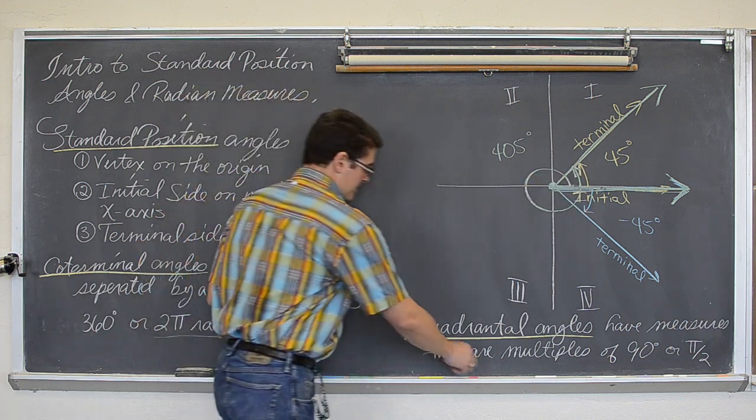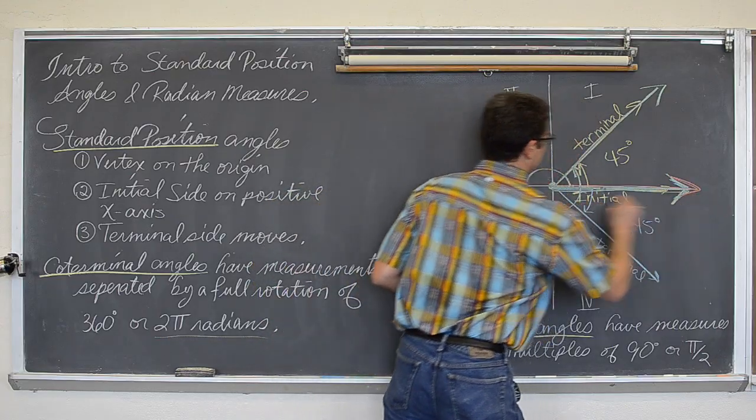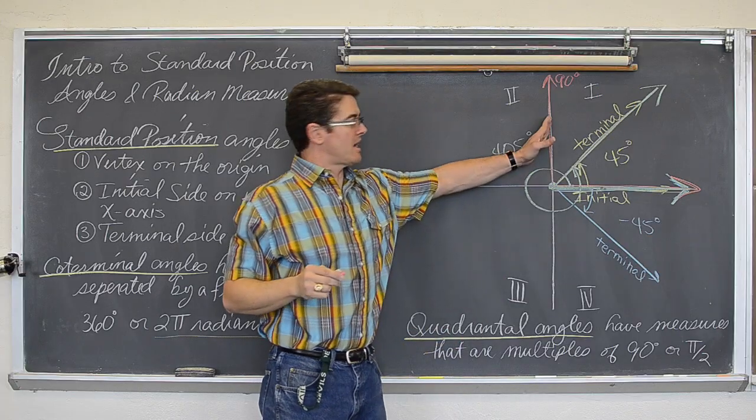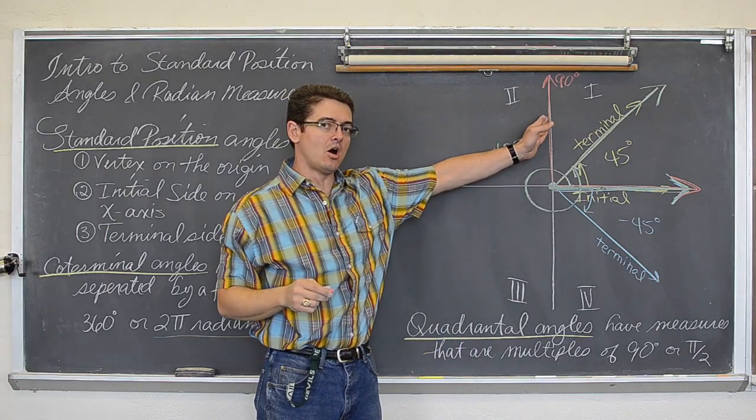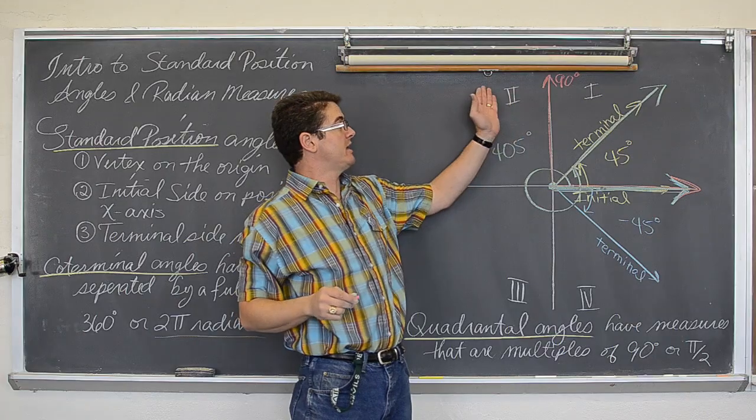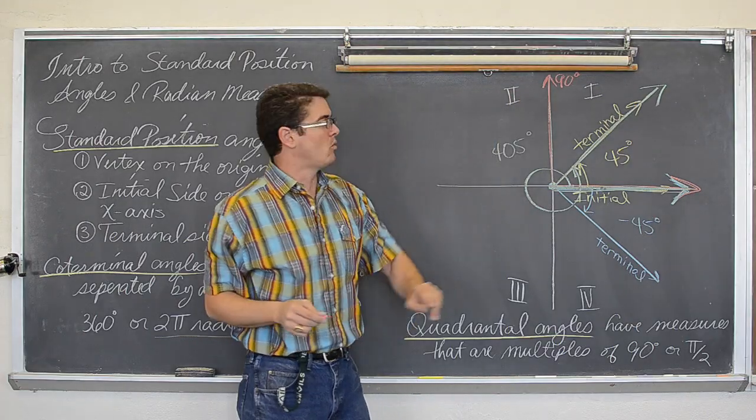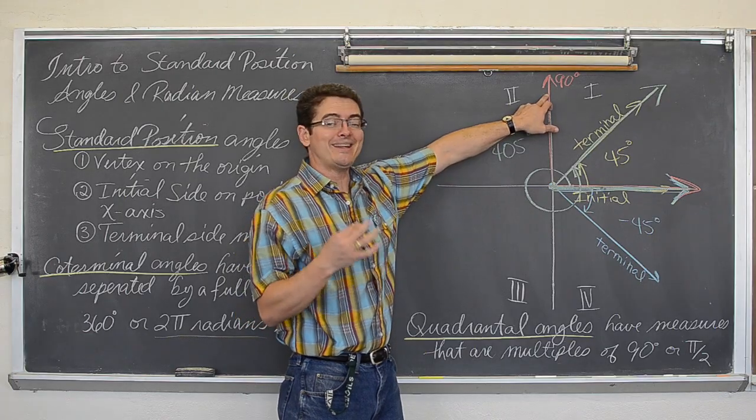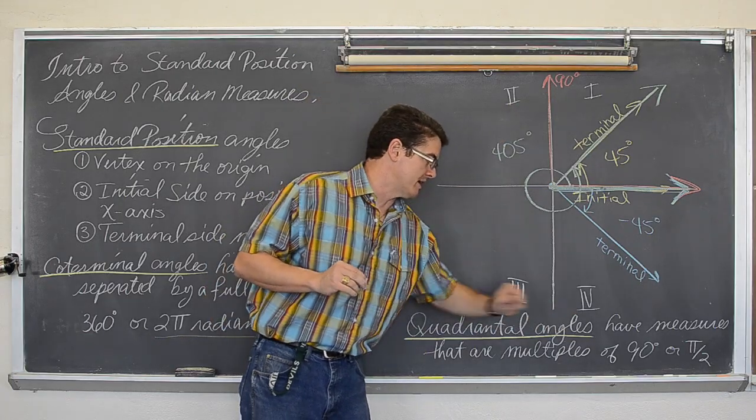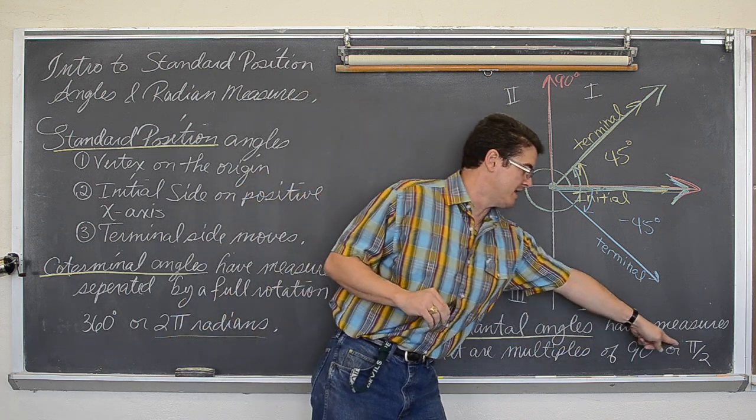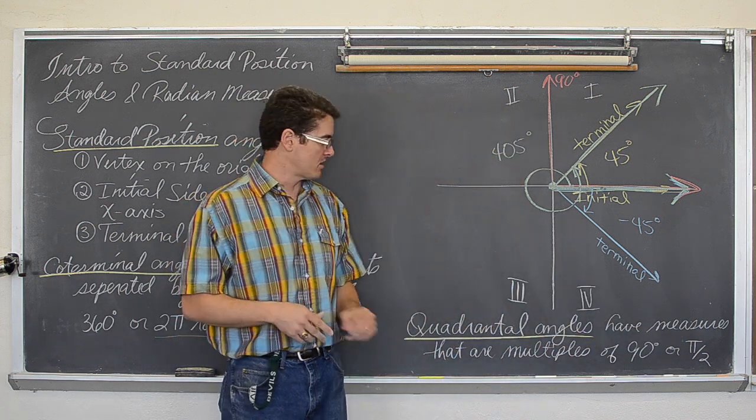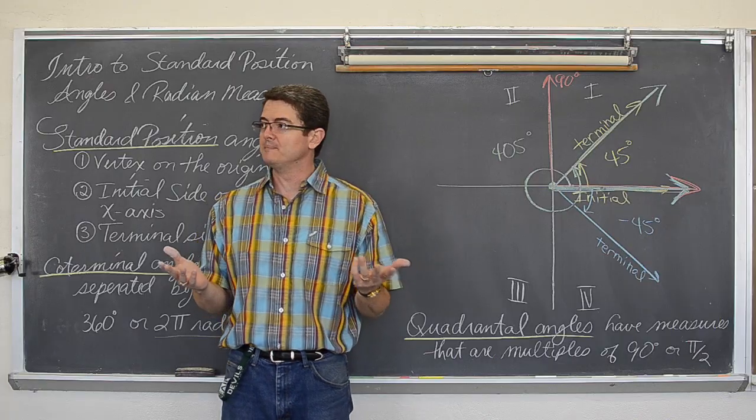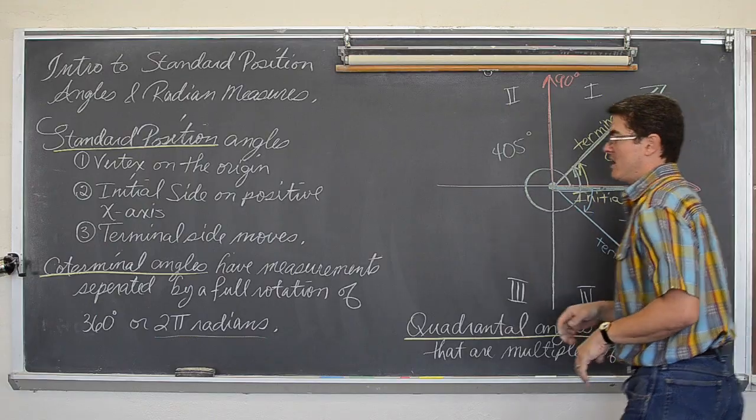If I draw an angle such as 90 degrees, well if I rotate exactly 90 degrees, I am landing the terminal side on an axis line. I am not actually in Quadrant 2 and I am not in Quadrant 1, I am exactly in between Quadrants 1 and 2. This angle is not in a Quadrant, it is a Quadrant angle. Any angle with a measurement of 90 or a multiple of 90 is going to be considered a Quadrant angle. Let's erase all this and get on to the next topic.